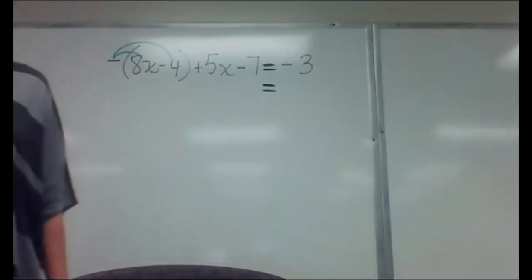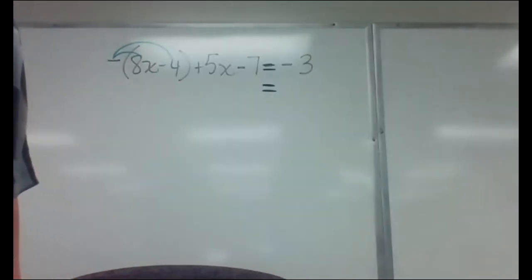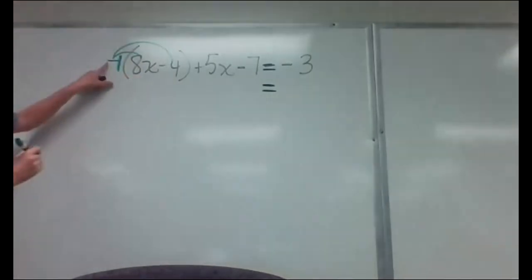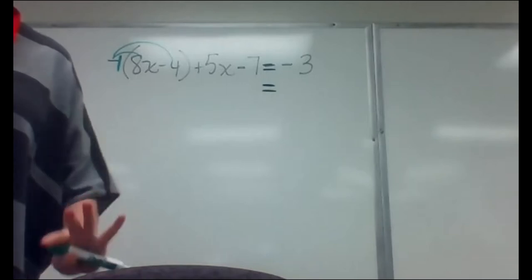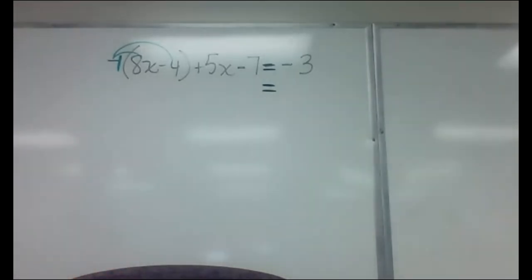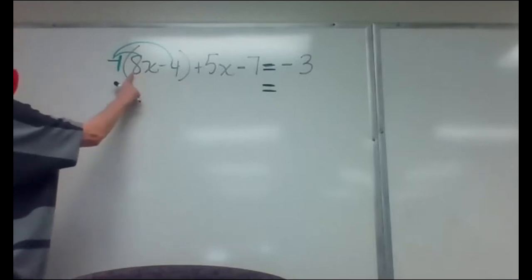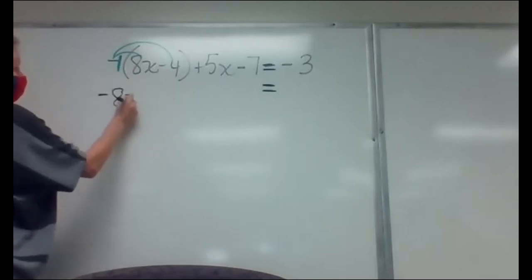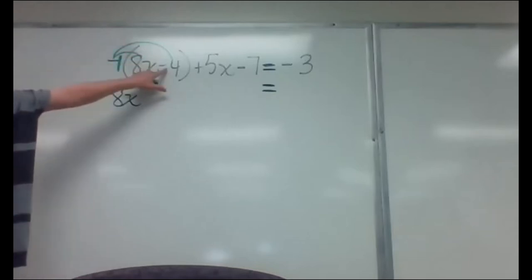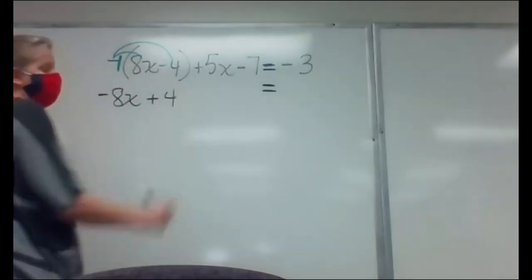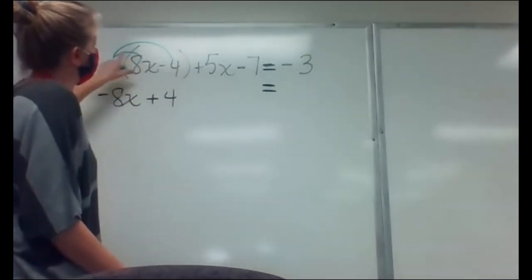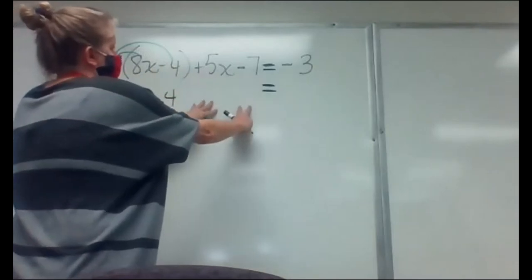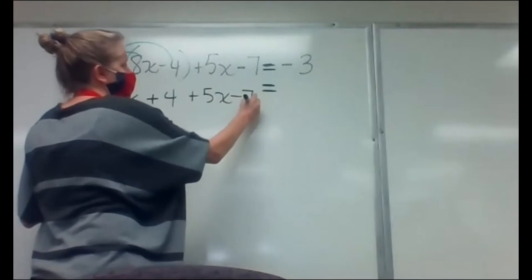The first thing that needs to happen is I need to get rid of parentheses. If you have numbers trapped inside parentheses you can't do anything with them, so they need to come out first. The way you do that is you distribute whatever is bumping up against the parentheses — in this case that negative, which we think of as a negative one. That means we're multiplying everything in the parentheses by negative one, so everything inside changes sign. Negative one times 8x gives me negative 8x, and negative one times negative four changes sign to positive four.